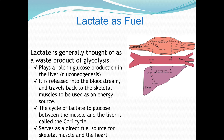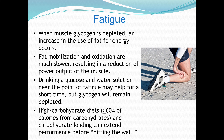Lactate is not a waste product. We measure lactate in the blood to determine how acidic the blood is, but it can be converted back into energy via the liver through the Cori cycle. We convert lactate to glucose between the muscle and the liver. The body is very energy efficient — when we produce a waste product, we can often use it to generate more energy.